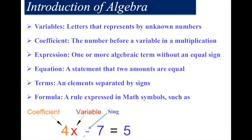For example, here is one equation: 4x minus 7 is equal to 5. This is the equation. Here, 4 is the coefficient and x is the variable. You can use any variable like a, b, c, d, e, or x, y, z. The minus sign is the operator, 7 is a constant, and 5 is also a constant number.